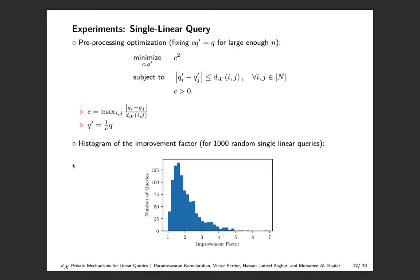For a single linear query q, the model parameters c and q' of the DX private Laplace mechanism are obtained by solving a preprocessing optimization problem. The objective function is chosen via a utility analysis for our mechanism with the L2 squared loss function, fixing c·q' equals q for very large n. We evaluated two mechanisms over 1000 random single linear queries, where query coefficients are randomly drawn from a uniform distribution over the real interval [0,1]. For each random query, we compute the improvement factor, and the resulting values are presented in a histogram. The DX private mechanism exhibits significant improvement in utility compared to the baseline mechanism.